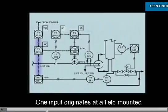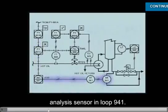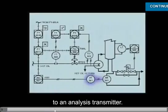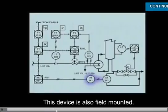One input originates at a field-mounted analysis sensor in Loop 941. The sensor sends an electrical signal to an analysis transmitter. This device is also field-mounted.